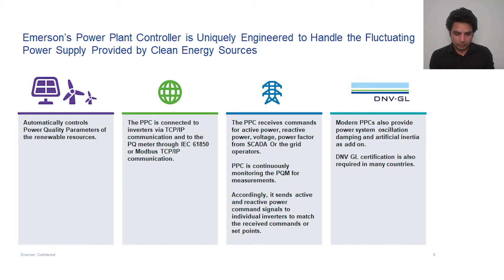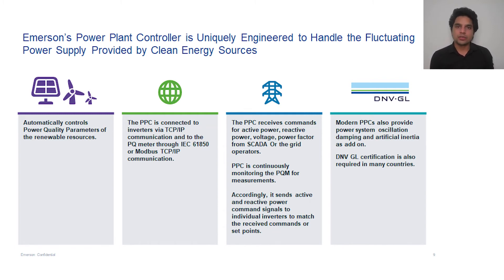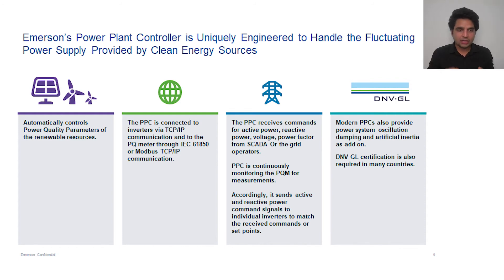How does PPC work? PPC is given a set point by the grid or by the customer. There is a power quality meter situated at the point of interconnection, which can be one kilometer or ten kilometers away. The physical connection can be fiber optic, and the communication protocol would be Modbus, IEC 61850, or any other. PPC continuously receives values from the power quality meter, looks at the set points given by the grid, and then tries to match those values by giving commands to inverters.